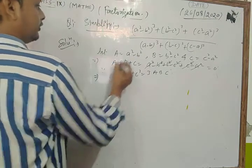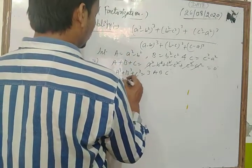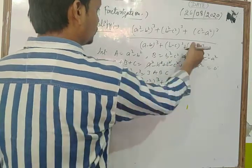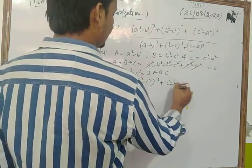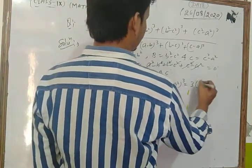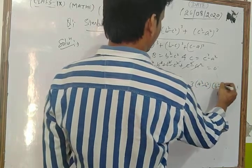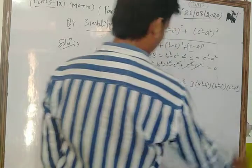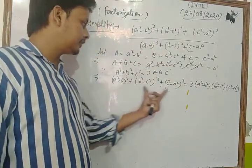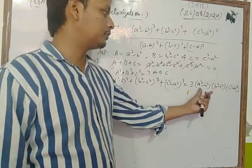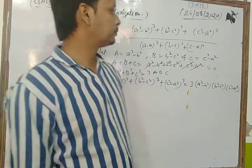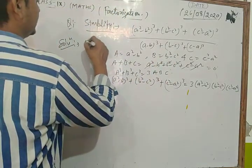So for the numerator we can write: (a² - b²)³ + (b² - c²)³ + (c² - a²)³ = 3(a² - b²)(b² - c²)(c² - a²).